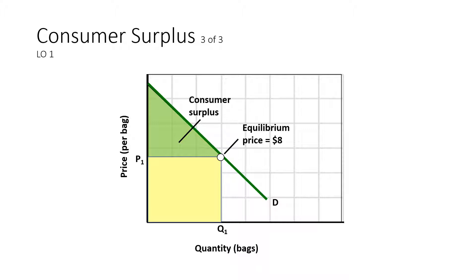Graphically, here is your demand curve sloping down. It starts at a quantity of zero and the maximum amount a person is willing to pay — for Bob, it could be $15. Eight is the equilibrium. So any price less than that maximum amount will create surplus for you as a consumer because you have that extra money in your pocket. Every price above equilibrium is considered a surplus represented by the green triangle, while the yellow square represents the amount they are going to pay. The triangle represents the consumer surplus.